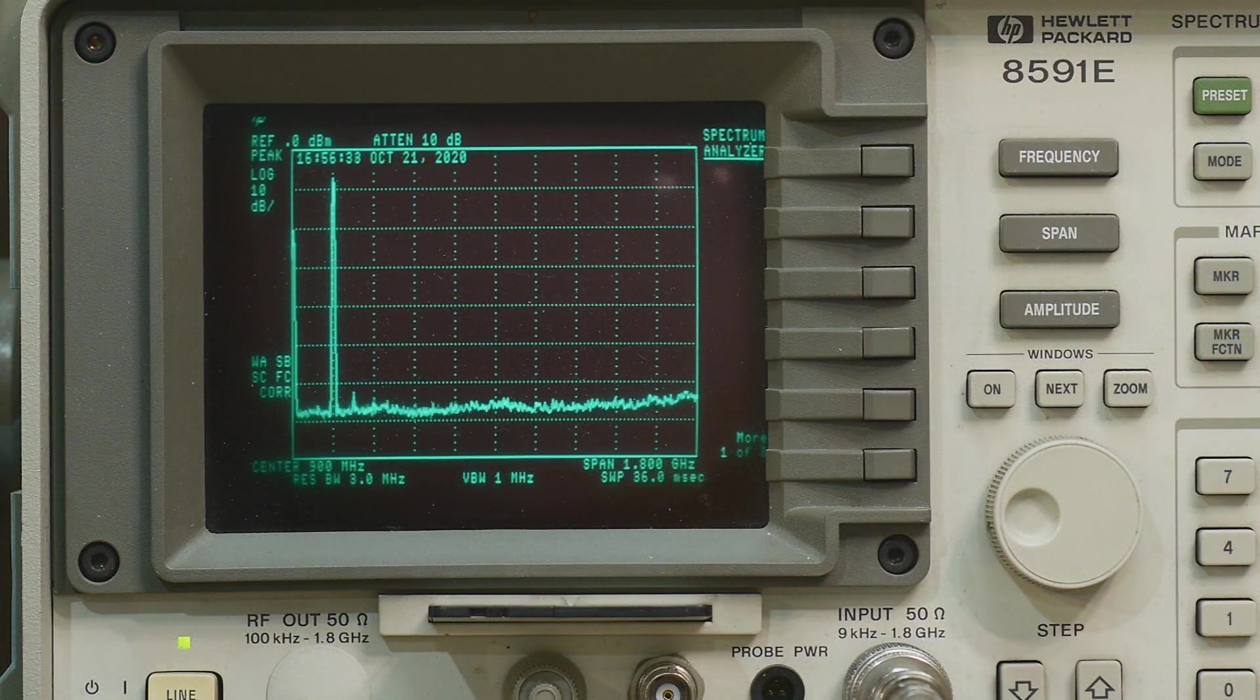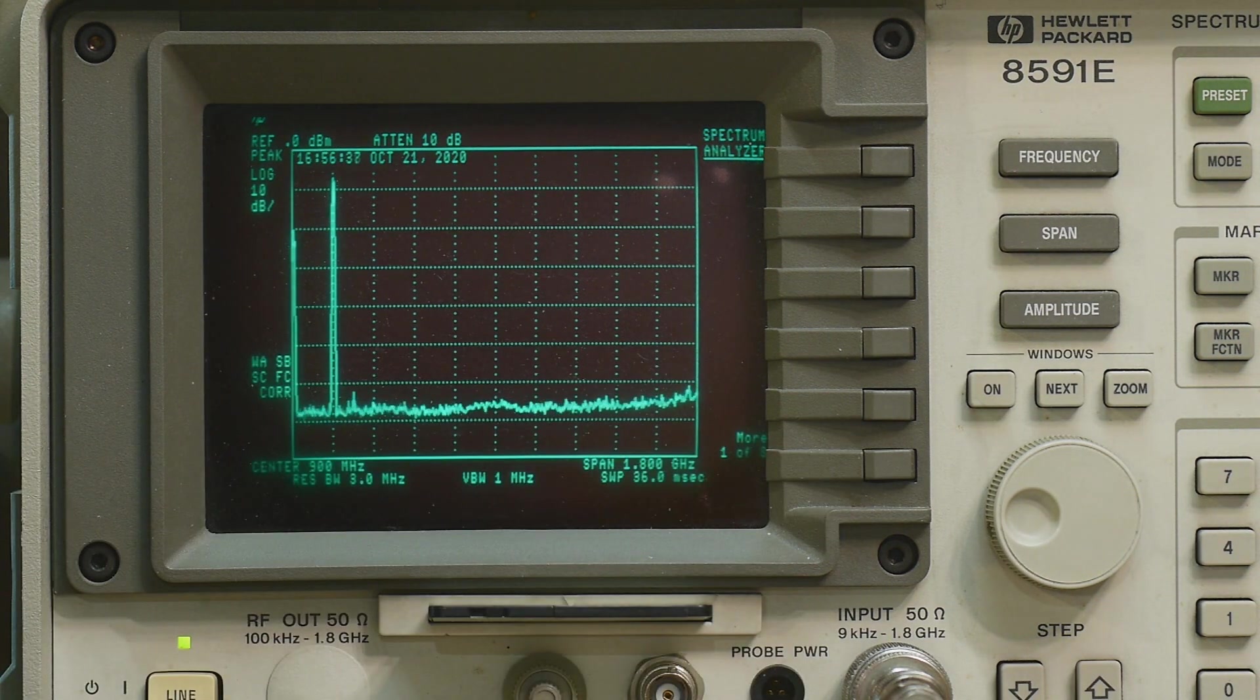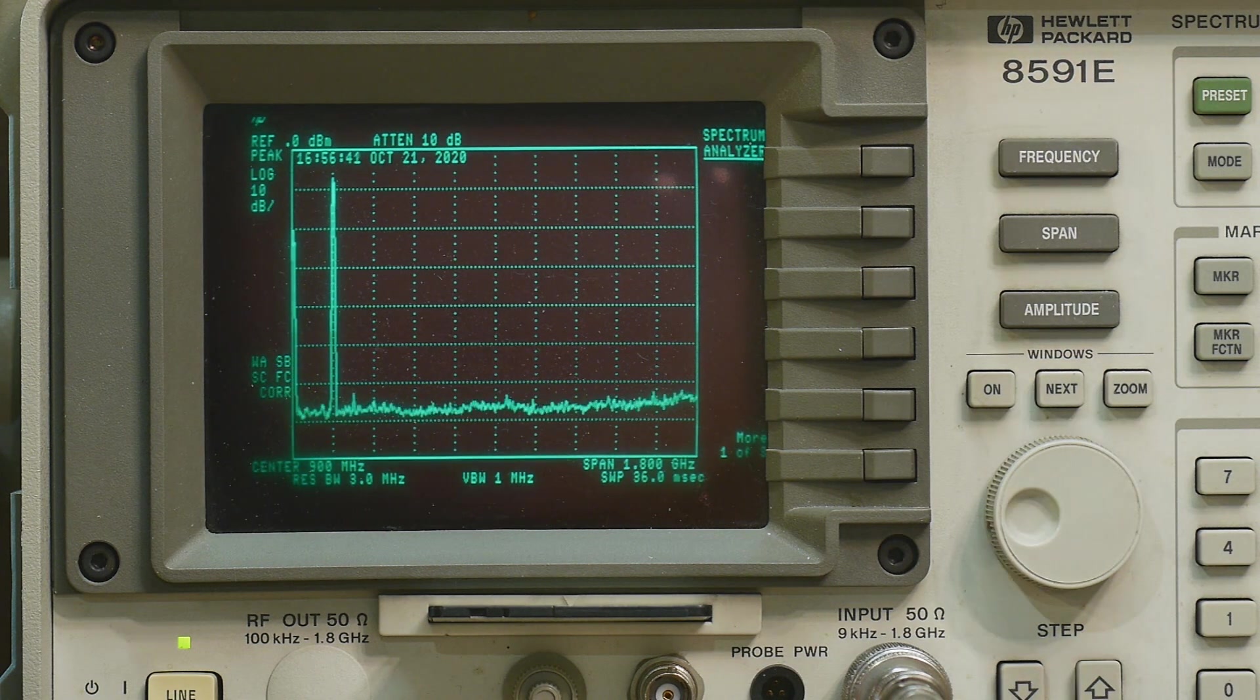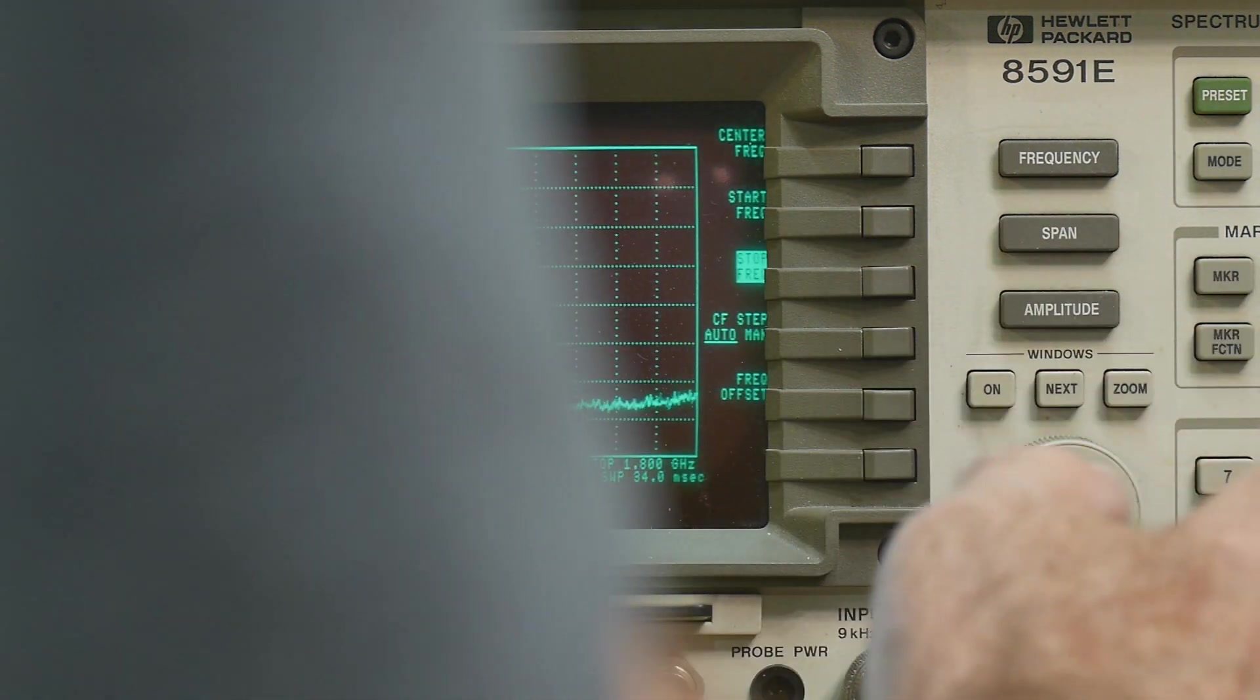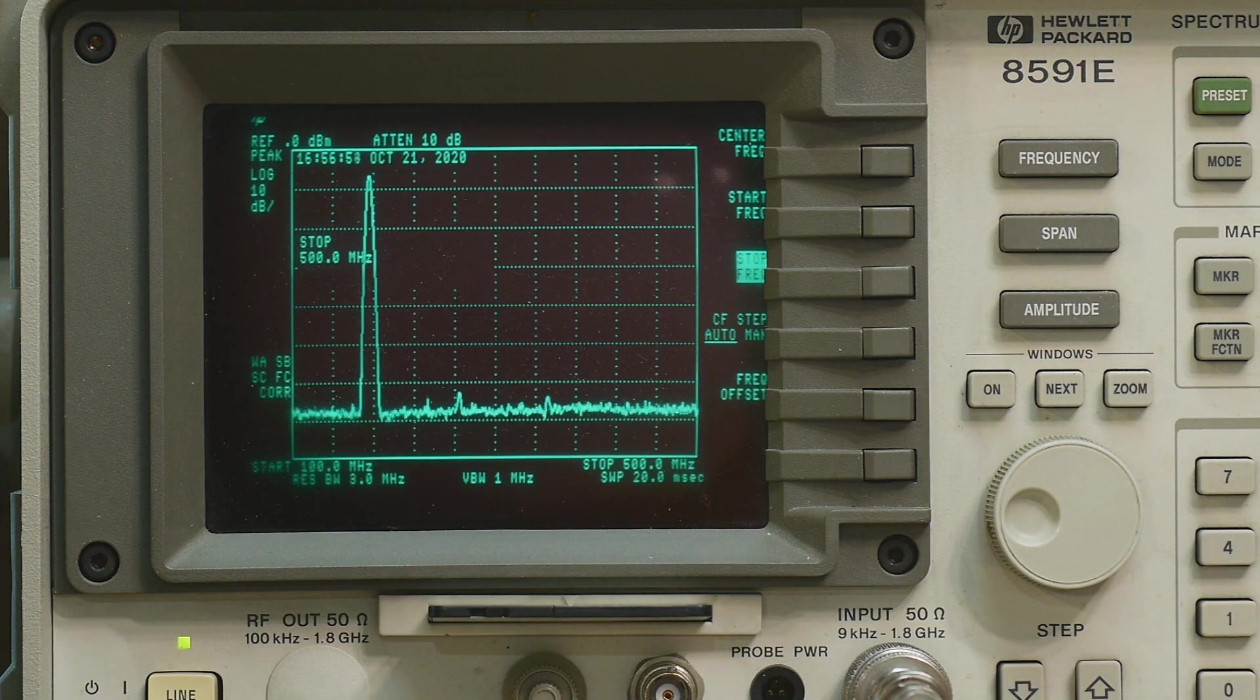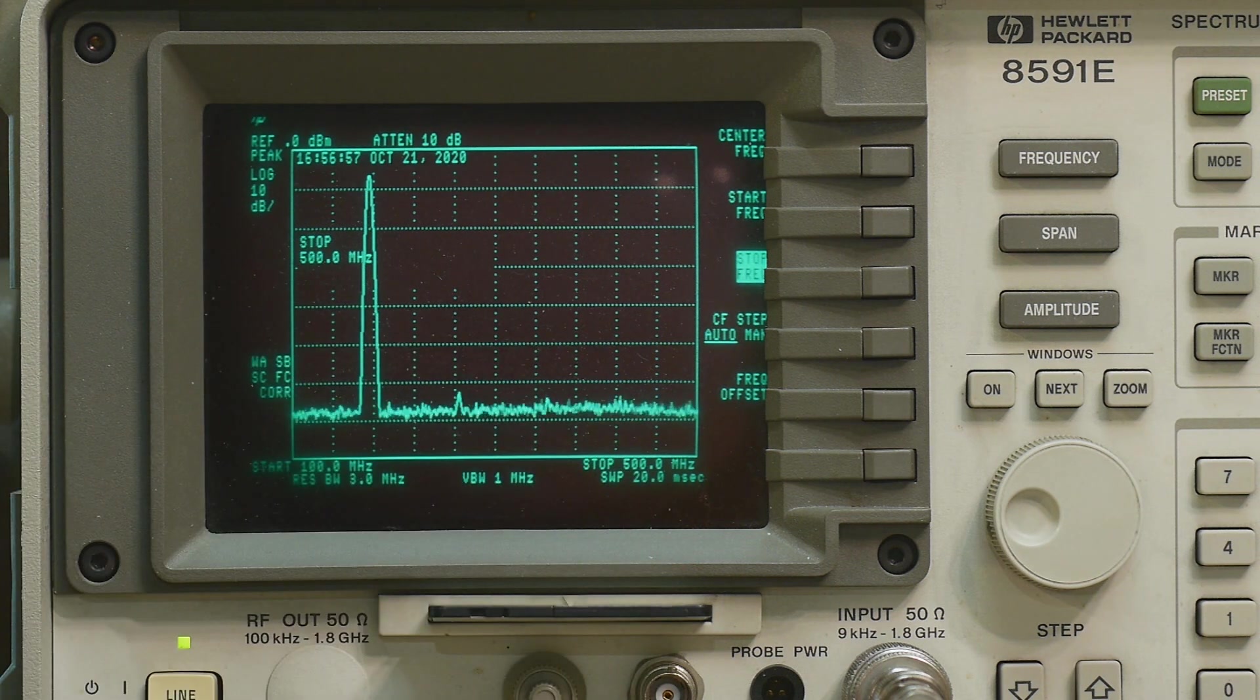All right, there we go. Very nice. Very nice. I don't see much going on over there. So not a lot of harmonics. Let's zoom in a bit. We'll do a frequency. We'll start it at 100 megahertz and we'll go out to 500 megahertz. There we go. Little tiny tiny tiny things down there.